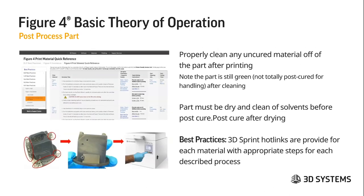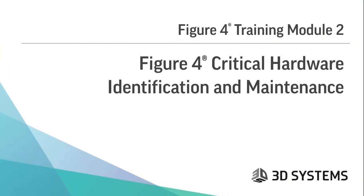To post-process the part, you want to properly clean any uncured material off the part after printing. Note the part is still green, meaning it's not totally post-cured. Handle it with nitrile gloves at this time. The part must be dry and clean of solvents before the post cure — it does not go straight from the solvent into the post cure unit; it needs a specific dry time called out in the quick reference guide. Once dried, it will go into the post cure unit for the prescribed time. These best practices are provided as 3D Sprint hot links for each material with the appropriate steps for each described process.